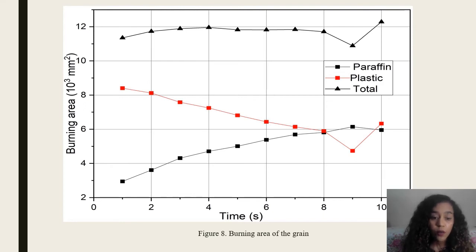As seen from Figure 8, the protective area decreases in time, whereas the paraffin area grows, keeping the total practically constant and close to 12,000 mm².